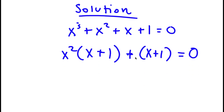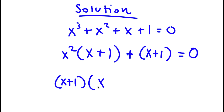Now if I factor out (x + 1) from this, I get (x + 1) times (x² + 1) is equal to 0.